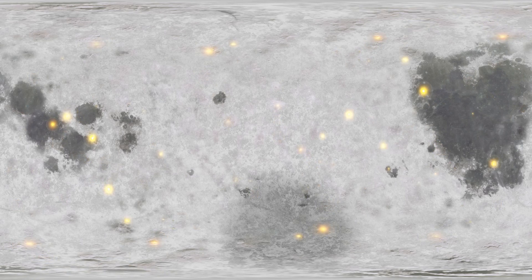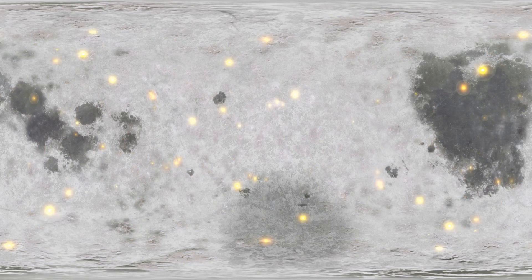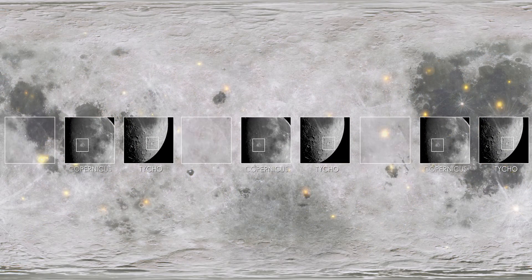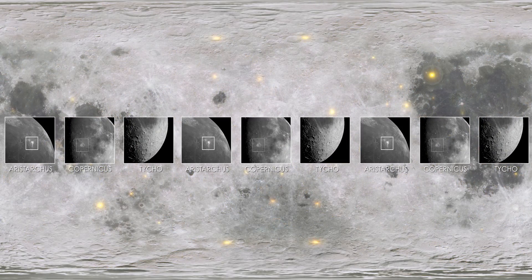Some of the largest, most recent, and best-known impacts from this period include the Tycho, Copernicus, and Aristarchus craters, which are unique due to the complex system of rays that stretch out from the impact site.